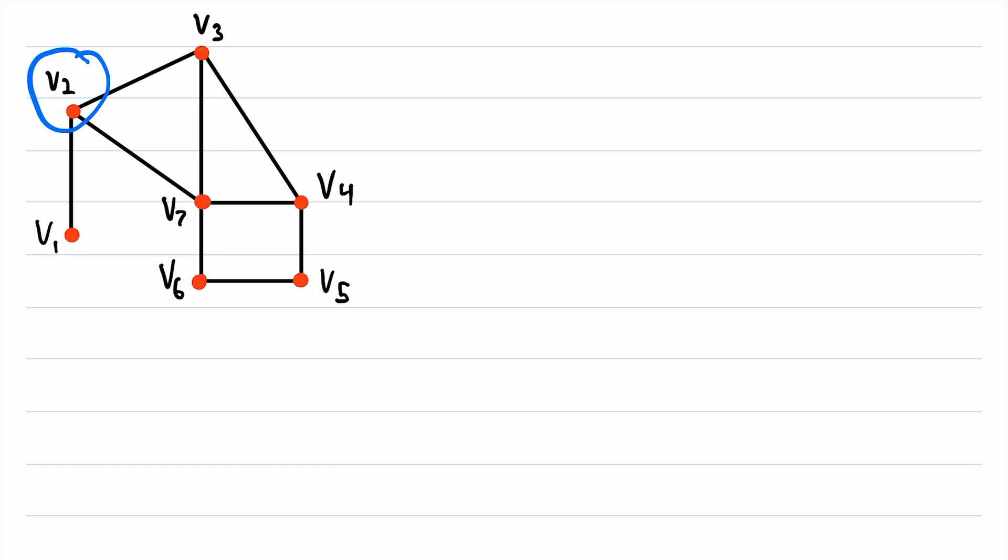One of the cycles in this graph starts at v2, then goes to the adjacent vertex v3, then to the adjacent vertex v4, then to the adjacent vertex v7, and then returns to the adjacent vertex v2 that we started at.